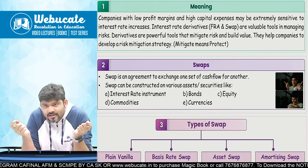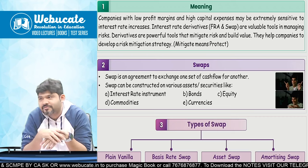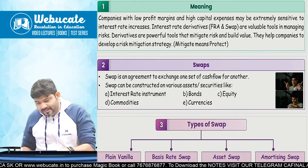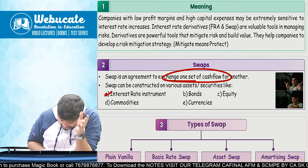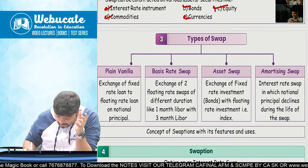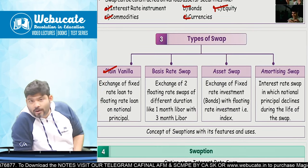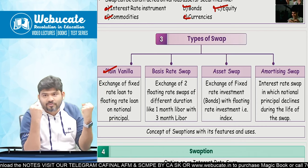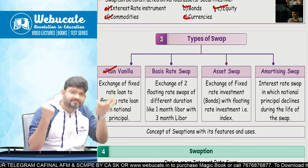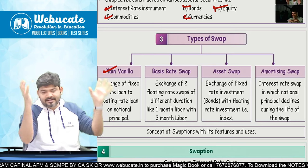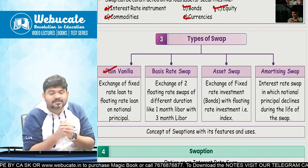First, what is a swap? Swap means exchanging an asset for an asset or liability for a liability — in the form of shares, derivative instruments, bonds, equity, commodities, or anything. A swap is an agreement to exchange one set of cash flows for another. What are the types of swaps? The first is Plain Vanilla Swap — exchange of a fixed rate loan with a floating rate loan. Mr. A wants fixed rate but has floating; Mr. B wants floating but has fixed — they interchange and create a plain vanilla swap, passing on interest payments on a notional principal to each other.